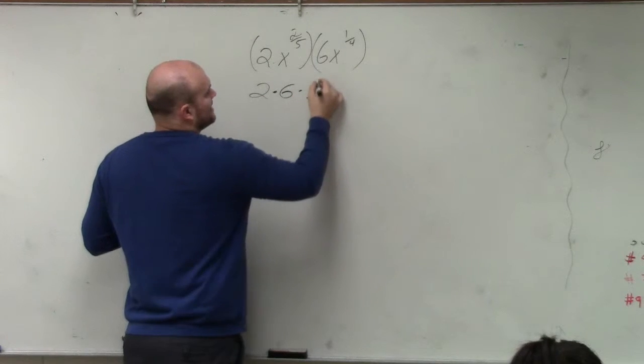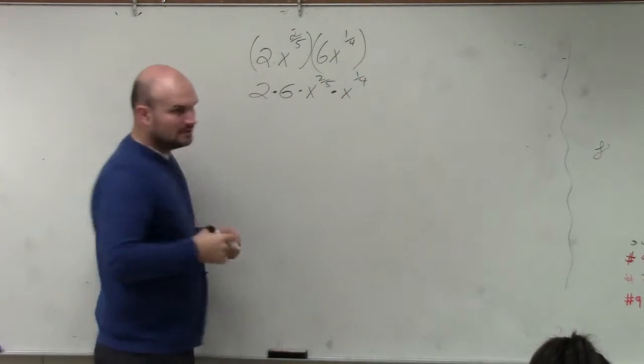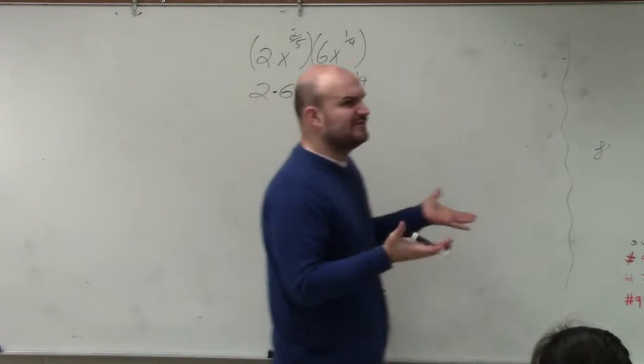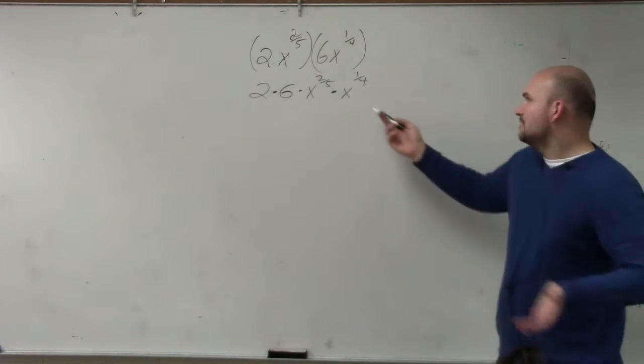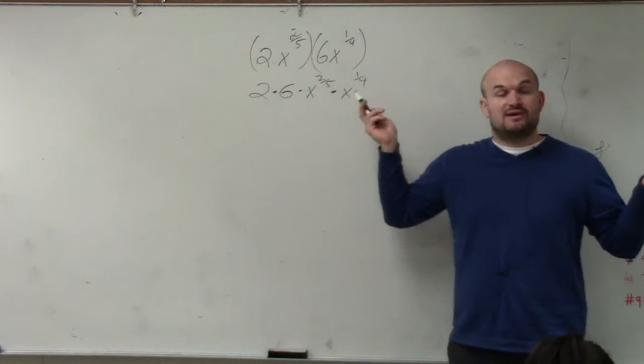So that's really 2 times 6 times x to the 2 fifths times x to the 1 fourth. Does everybody agree with how I wrote this? We're basically multiplying exponent times exponent, but I can only multiply numbers by numbers and exponents by exponents, right? And they have the same base, so I can multiply them.